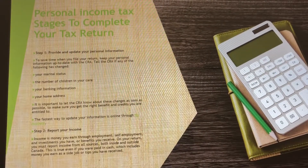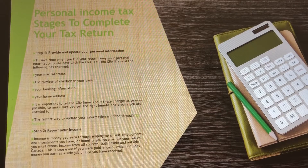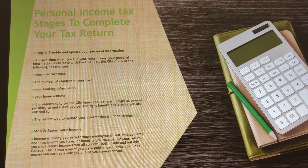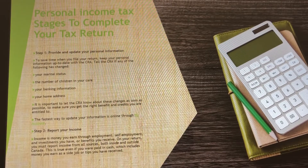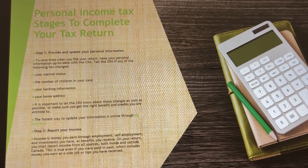Step one: you have to provide updated information to CRA — your marital status, the number of children in your care, your banking information, your home address, and any other information you want CRA to know.